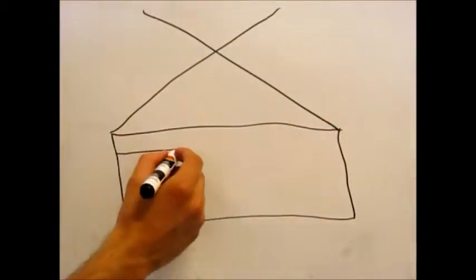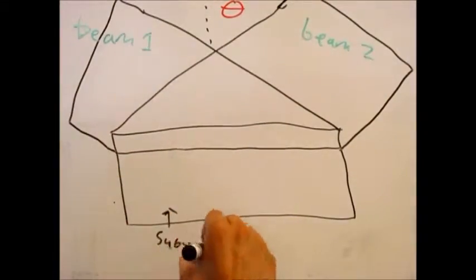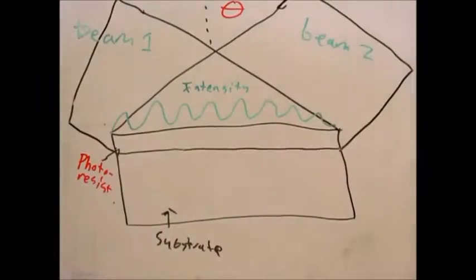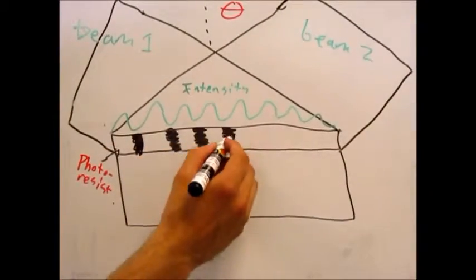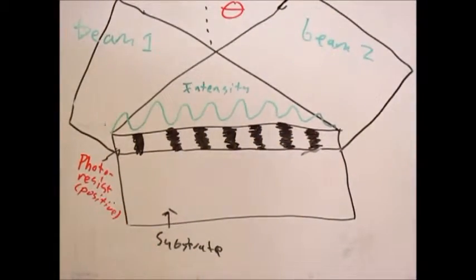The first step is fabrication of the photoresist template by using two-beam laser interference lithography. On the substrate is a polymer that becomes soluble when exposed to light, called positive photoresist. When developed, the intensity pattern of the interfering lasers is imprinted upon the photoresist atop the substrate.